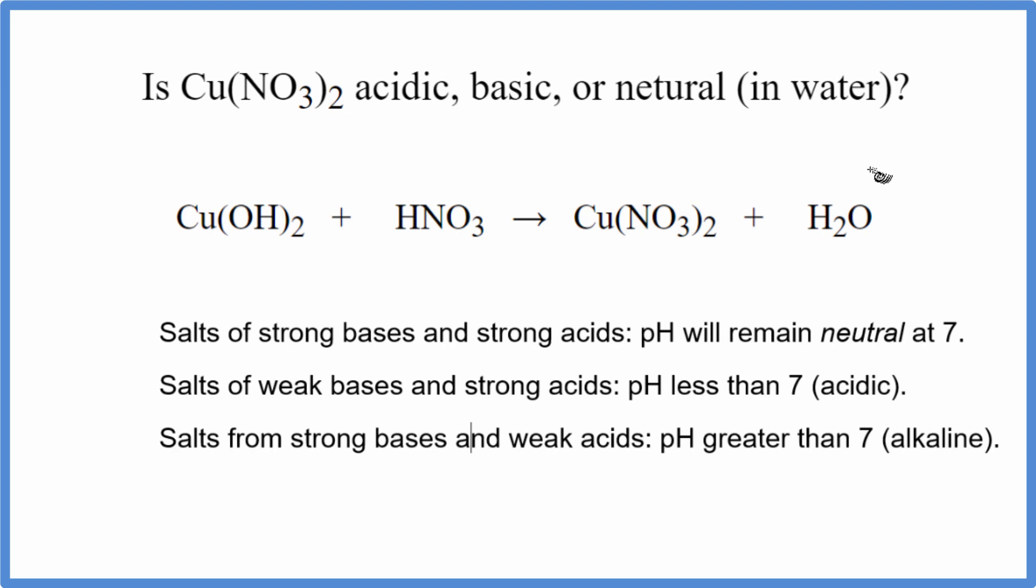To determine that, we need to know the neutralization reaction that produced the copper 2 nitrate. To get copper 2 nitrate in a neutralization reaction, we'll have copper 2 hydroxide, a base, plus nitric acid.